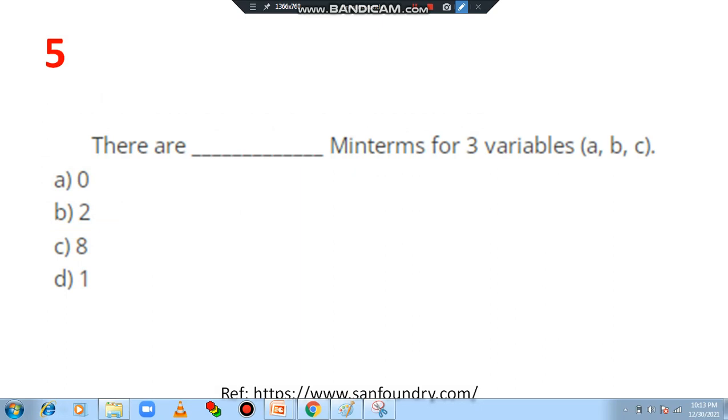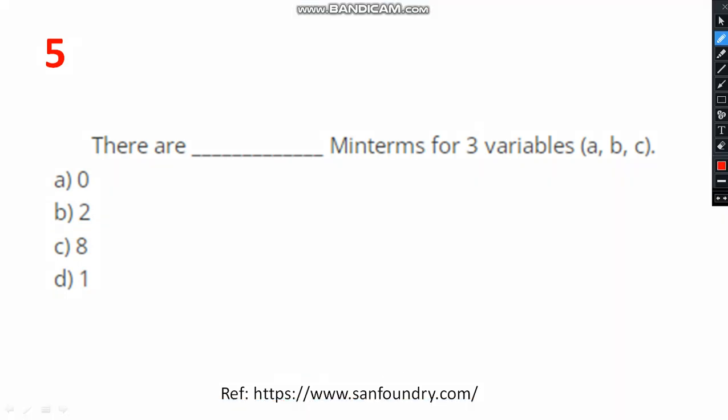Question number 5. There are dash min terms for 3 variables. Suppose n is equal to 3, that means 3 variables like A, B, C. Then there are dash min terms. How many min terms are there? The number of min terms is equal to 2 raised to n, that is nothing but 2 raised to 3. What is 2 to the power 3? 2 to the power 3 is nothing but 8. So please select which option will you select? 2 to the power 3 means 8, so I can select option C. Option C is the correct answer.